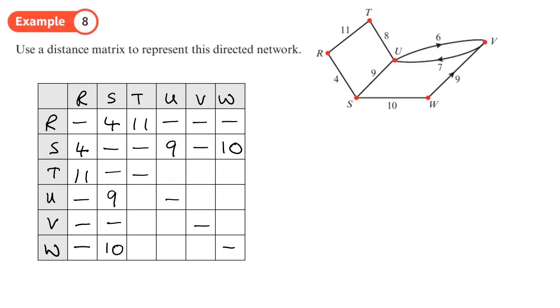So S and T, that will just be dash. S and U, that will be 9, and S the other way around will also be 9 because it's not directed. S to V is going to be dash and 10 to W, so dash 10. Next vertex we're going to look at is T here.